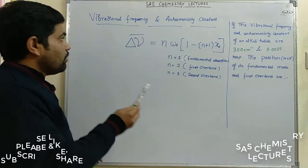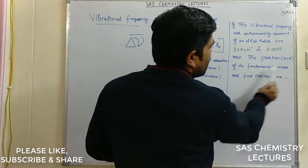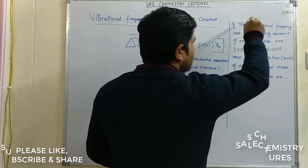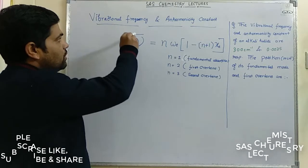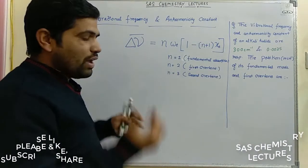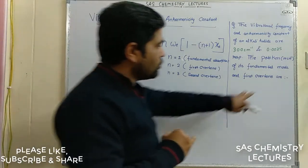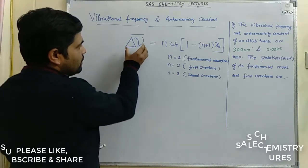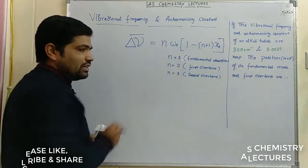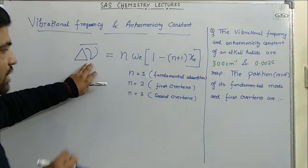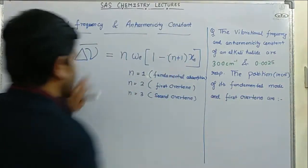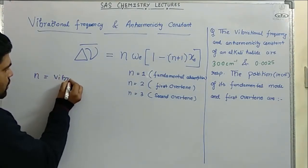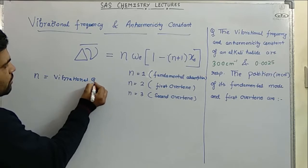Today our topic is to find the fundamental mode and first overtone. Here is the formula with which you can easily find out the vibrational frequency of the first fundamental mode, first overtone, second overtone, and so on. The variable delta nu represents these values.